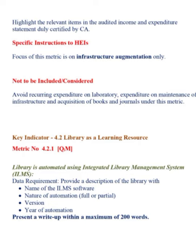For SOP, the document required for verification: provide the consolidated fund allocation towards infrastructure augmentation, duly certified by the head of the institution. Highlight the relevant items in the audited income and expenditure statement, duly certified by CA. Specific instruction: the focus of this metric is on infrastructure augmentation only. Avoid recurring expenditure on laboratory, expenditure on maintenance of infrastructure, and acquisition of books and journals under this metric.